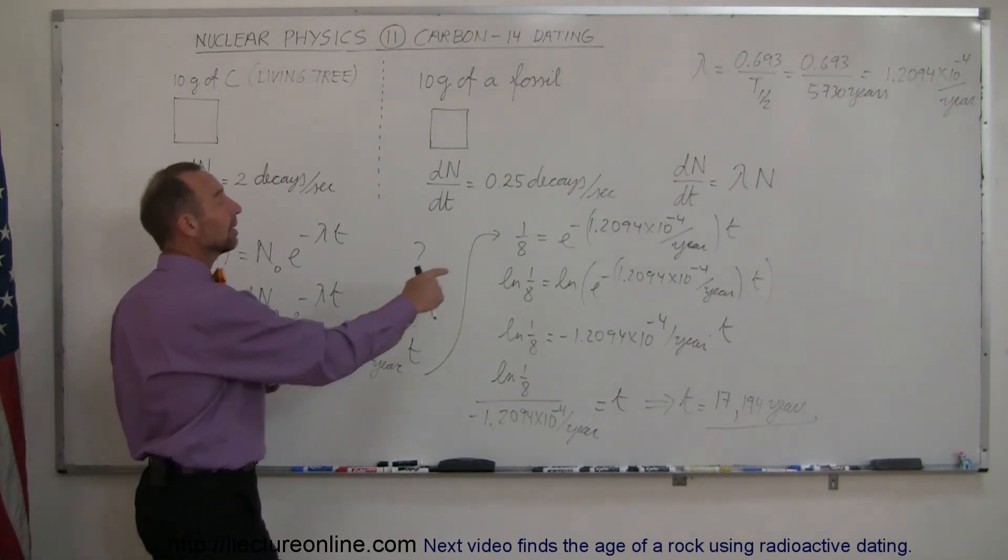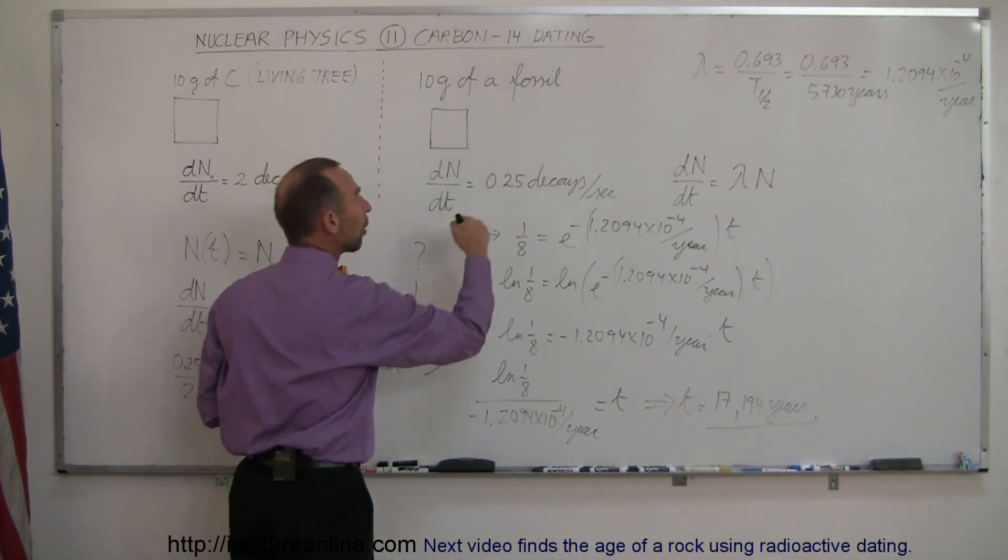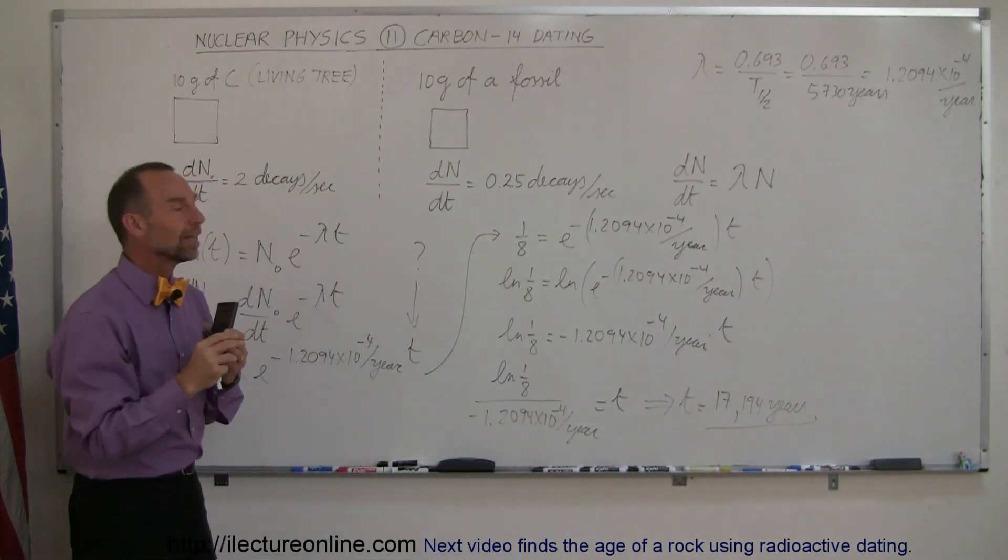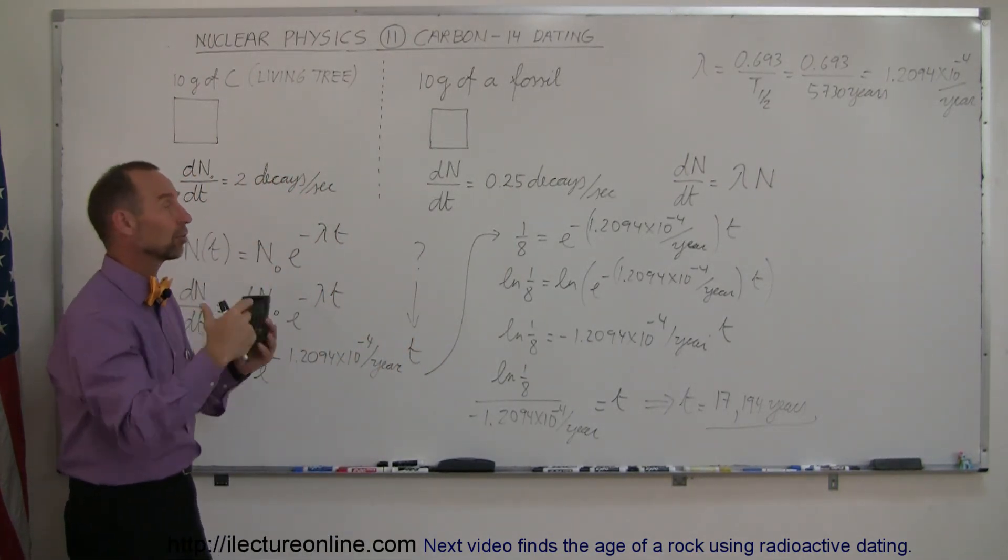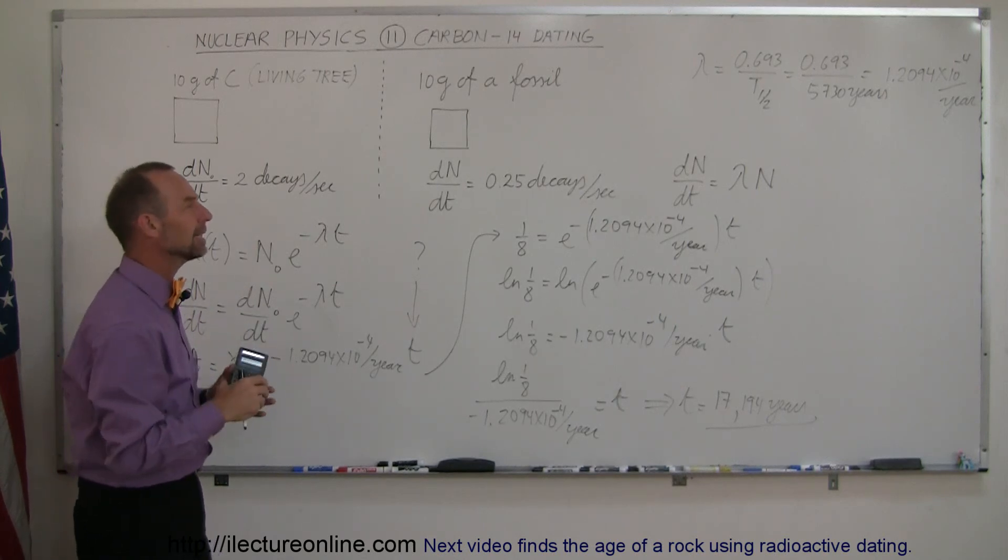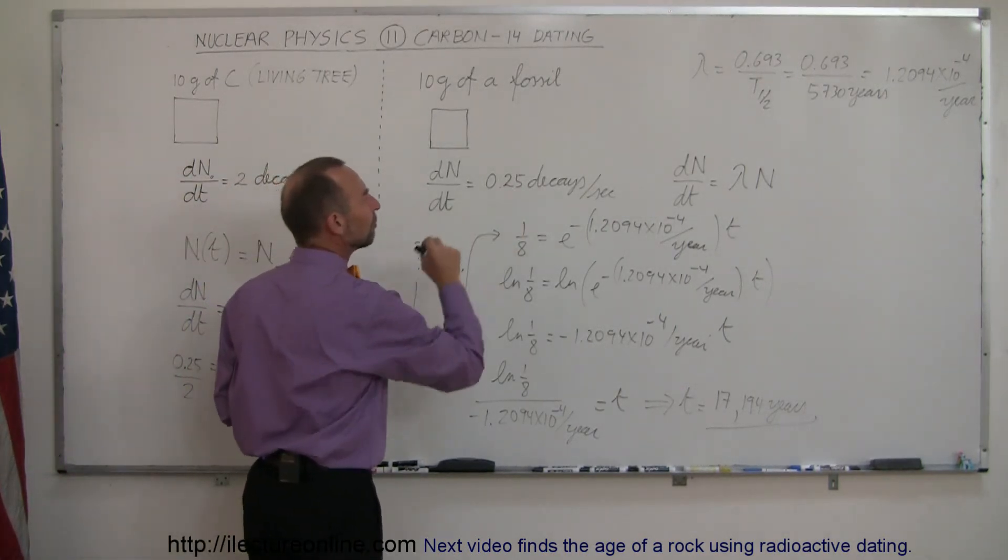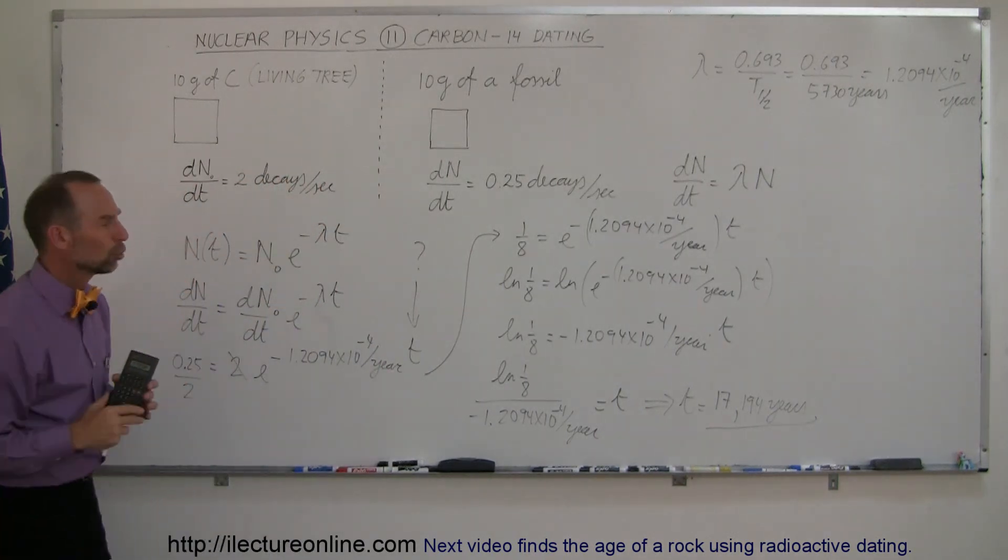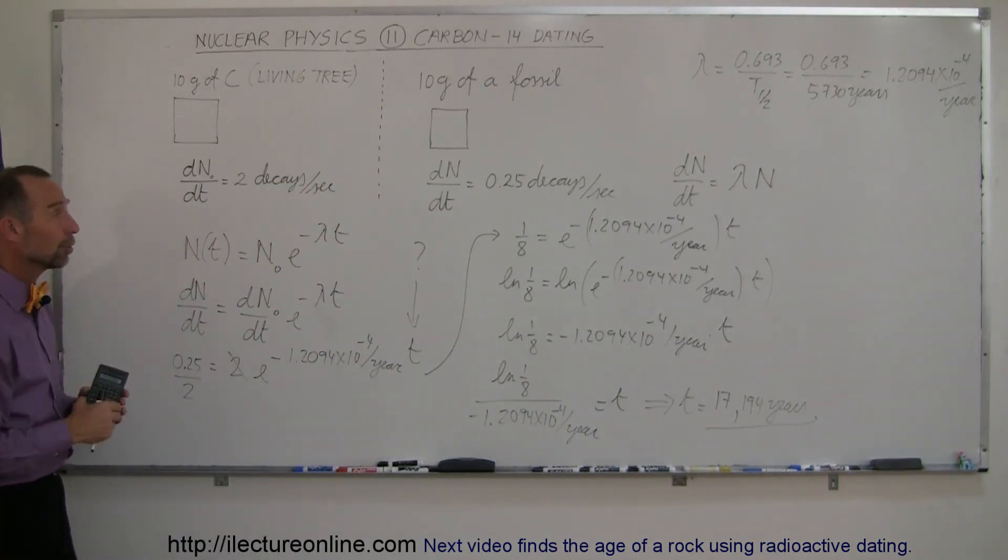Carbon-14 is a good method for fossils to the age of maybe 40,000 or 50,000 years. Anything beyond that, the decay rate will go down so small to the point where it's almost indiscernible from the natural radiation around us that you can no longer pick up the decay rate of these radioactive samples when they're too old. But anyway, that's how you do that.